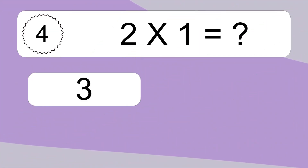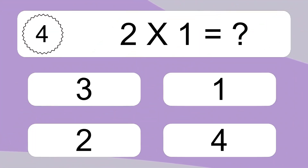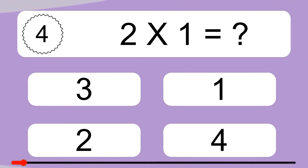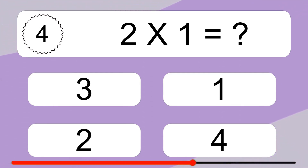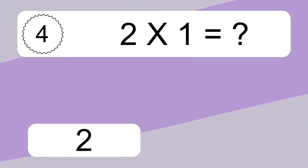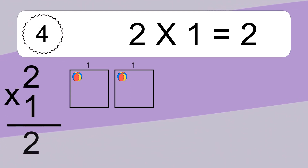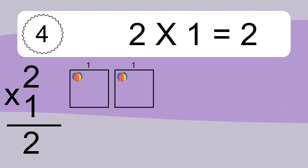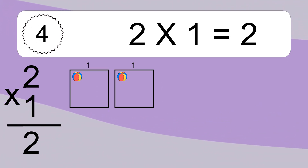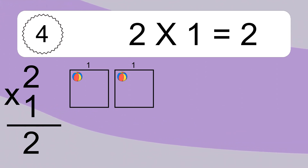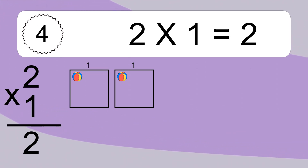2 times 1 equals what? 2 times 1 equals 2. We have 2 boxes, and each box has 1 colorful ball inside. If you count all the balls in all the boxes together, you will have 2 times 1 balls. This equals 2 balls.